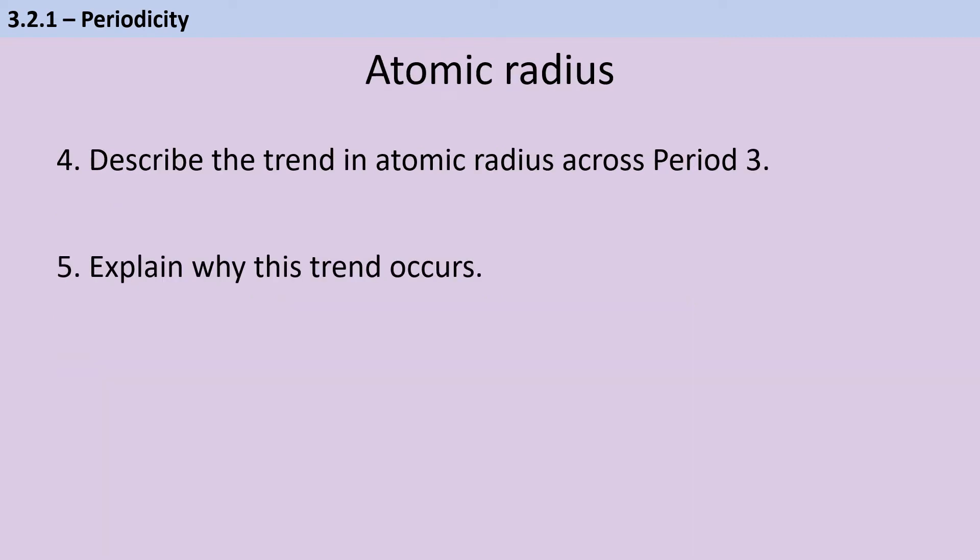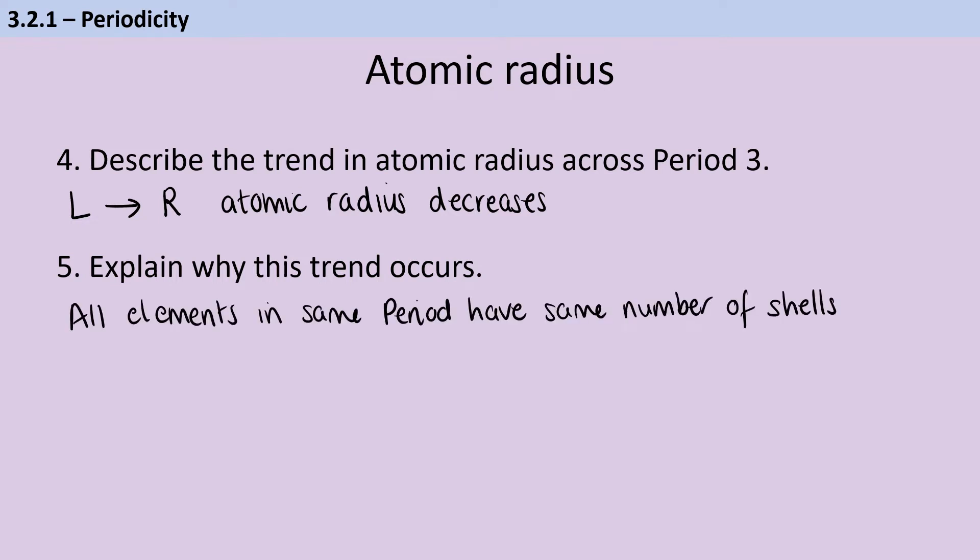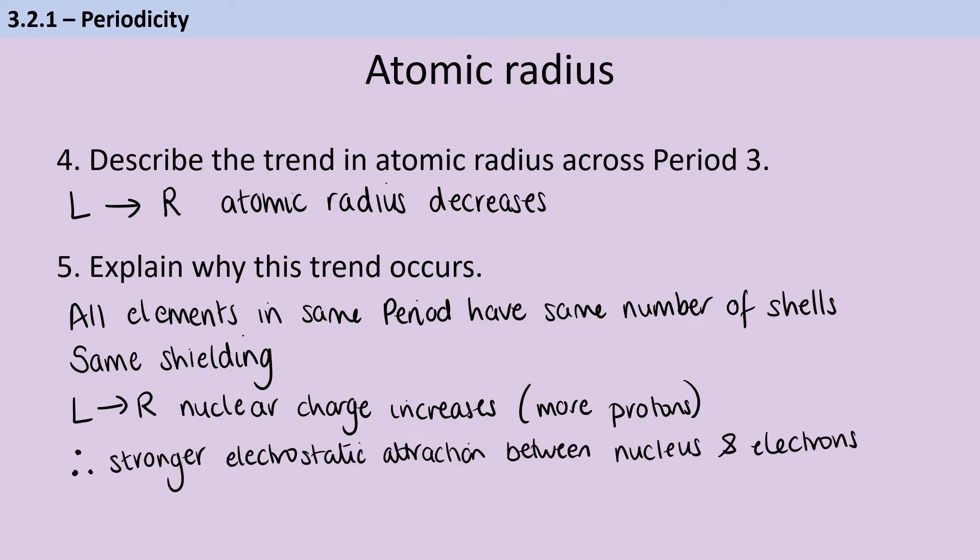As we go across period 3, the atomic radius actually decreases. All elements in the same period have the same number of shells. Everything in period 3 has three shells, meaning there's the same shielding by inner electrons. As we go from left to right, the nuclear charge increases because the number of protons is increasing. This means there's a stronger electrostatic attraction between the nucleus and electrons. As we add each new proton, there's a stronger force pulling those electrons in closer.